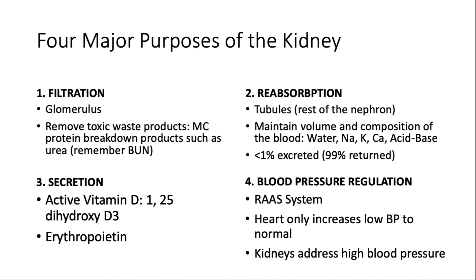The first major function is filtration. This occurs at the glomerulus. Our goal is to remove toxic waste products from the blood — the most common being urea, which is a byproduct of protein breakdown. The second job is reabsorption. In the glomerulus, we filter out the majority of our blood, and we need to reabsorb some of those products based on how much we need in the body.